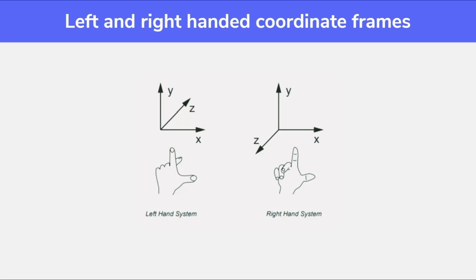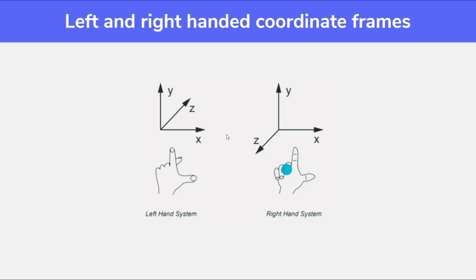There are two systems: left-hand system and right-hand system. In the right-hand system, the x-axis is represented using the thumb, the y-axis with the index finger, and the z-axis with the middle finger. So in this case, where the z-axis is coming towards us, it can only be represented using the right hand because the middle finger is coming towards us.